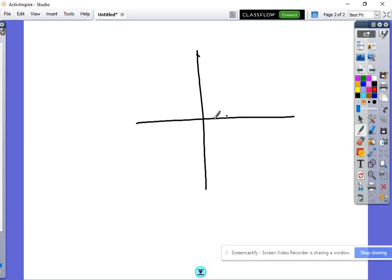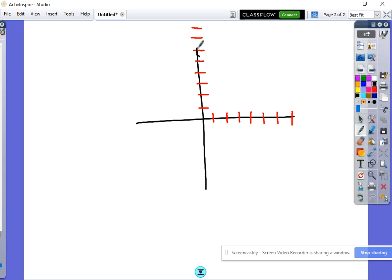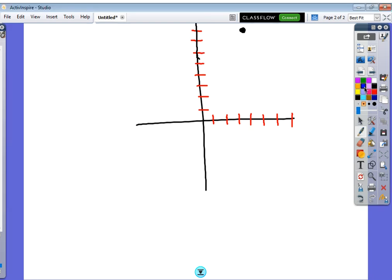So our vertex in this case was at 4, 8. So our vertex was all the way up here at 4, 8. Here we are.